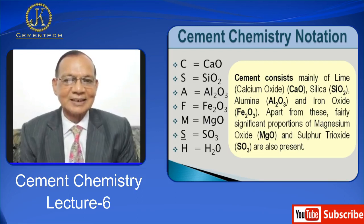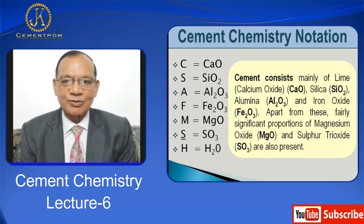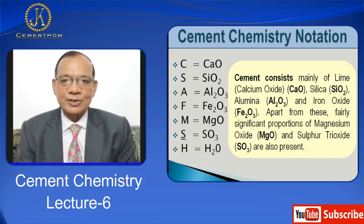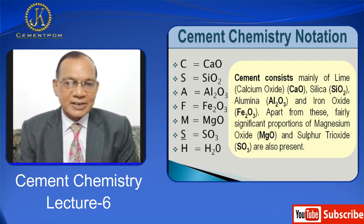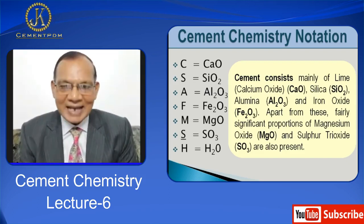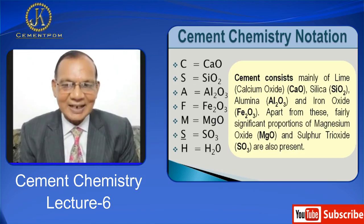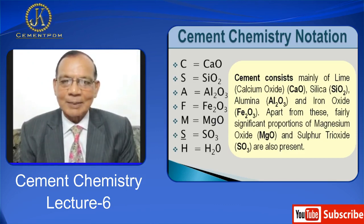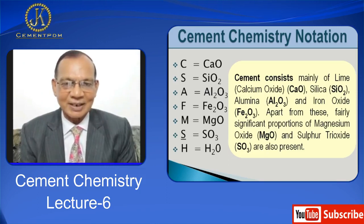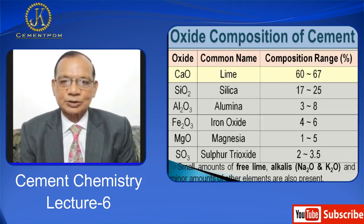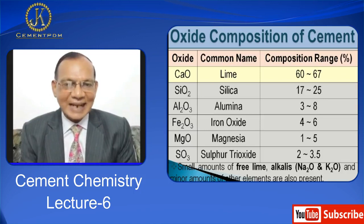F stands for Fe2O3, iron oxide. M stands for MgO, magnesia or magnesium oxide. S-bar stands for SO3. H stands for H2O, and so on and so forth. Cement consists mainly of lime that is calcium oxide CaO, silica SiO2, alumina Al2O3, and iron oxide Fe2O3. Apart from these, fairly significant proportions of magnesium oxide MgO and sulphur trioxide SO3 are also present.